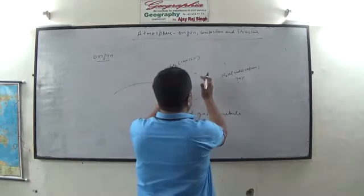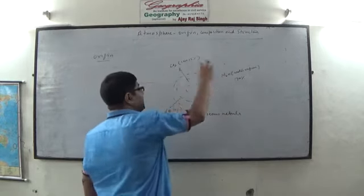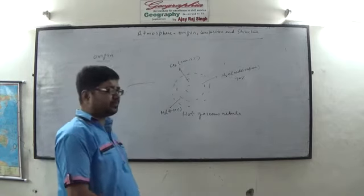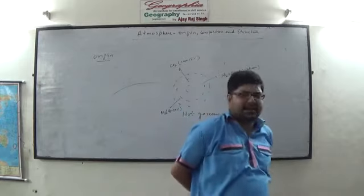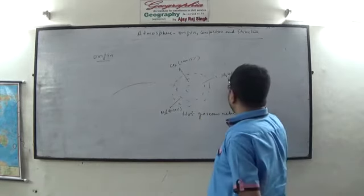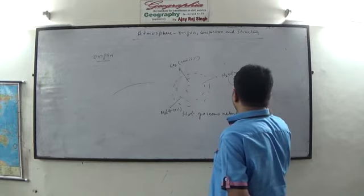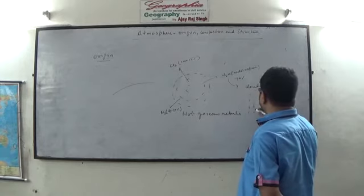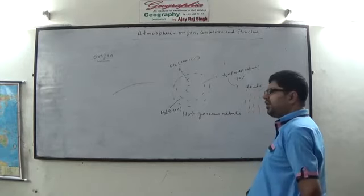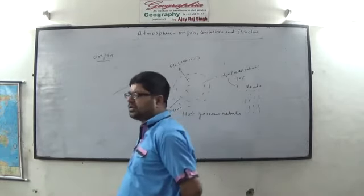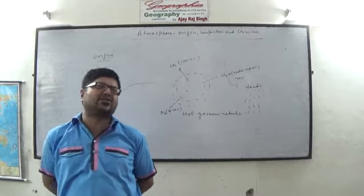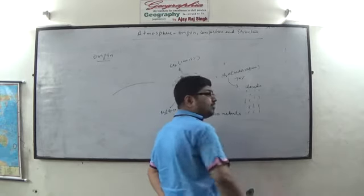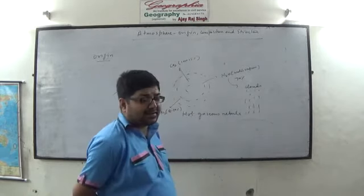Initially the earth transitioned from a gaseous state to a solid state. The three most important gases were water vapor, carbon dioxide, and nitrogen. Gradually, this water vapor led to the formation of clouds. The water vapor condensed and led to the formation of clouds, and these clouds caused stupendous heavy rainfall for thousands and lakhs of years. This rainfall further expedited the process of cooling.